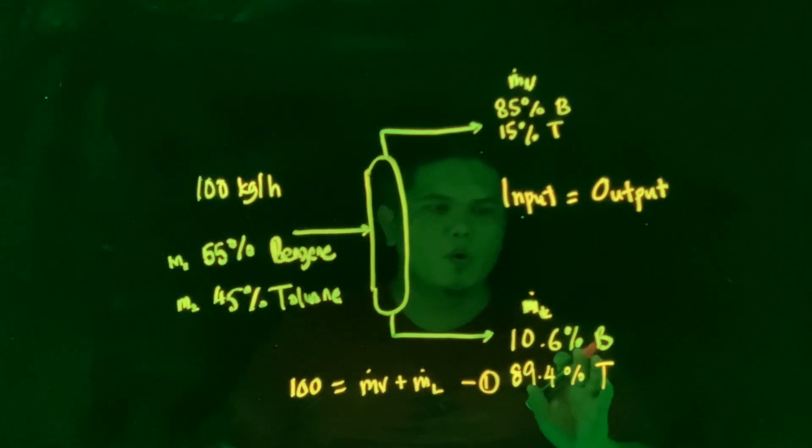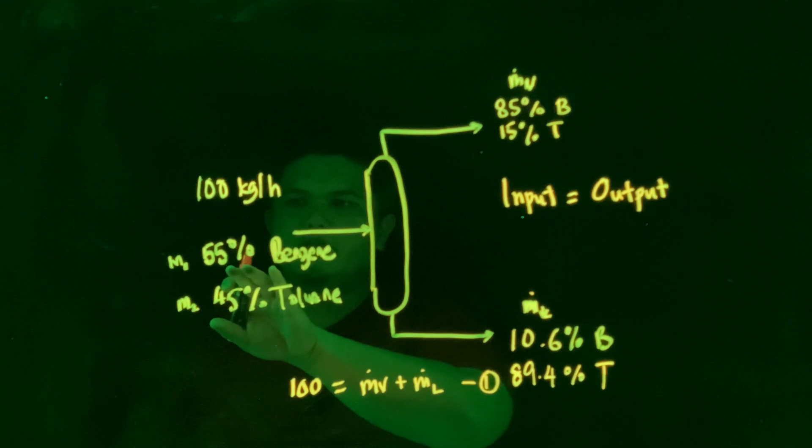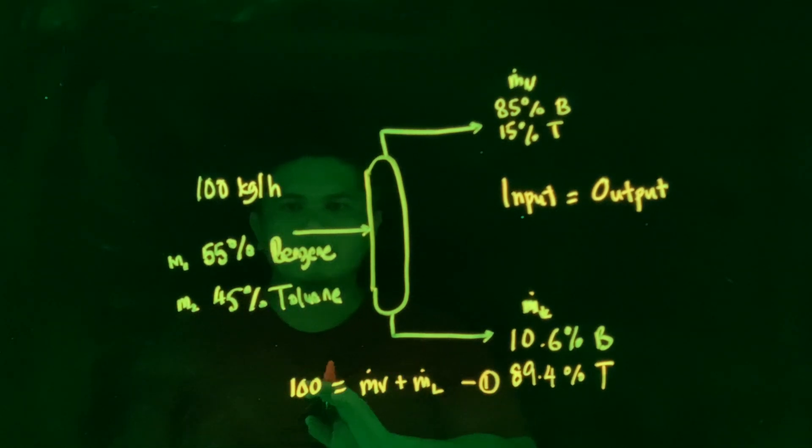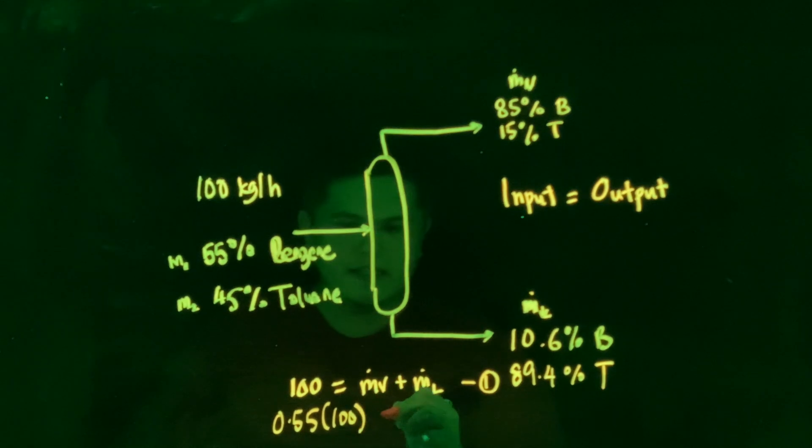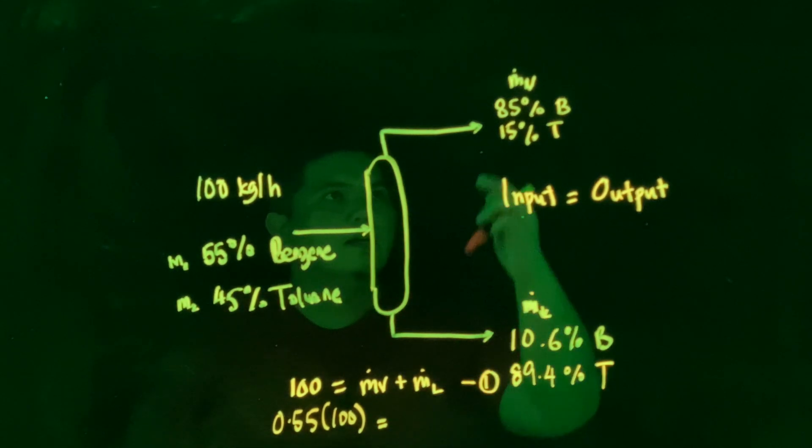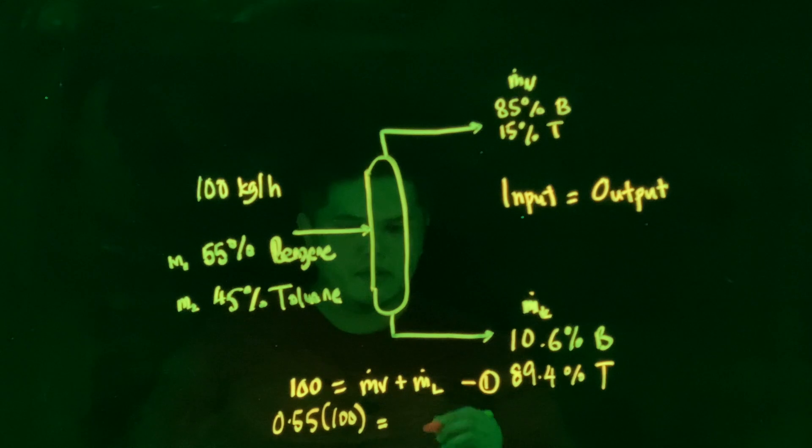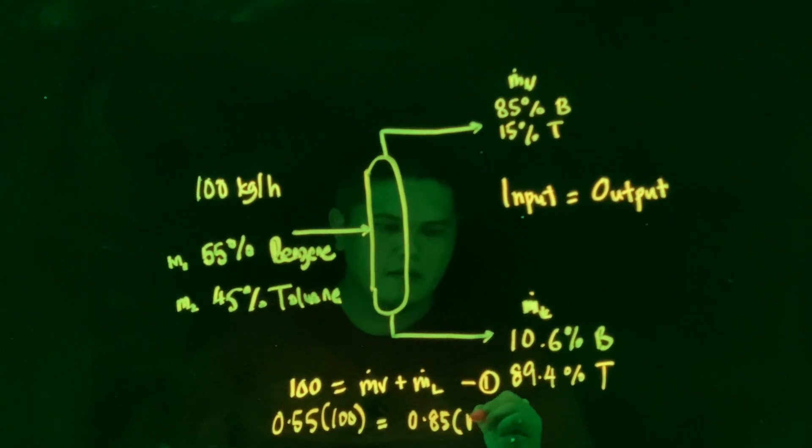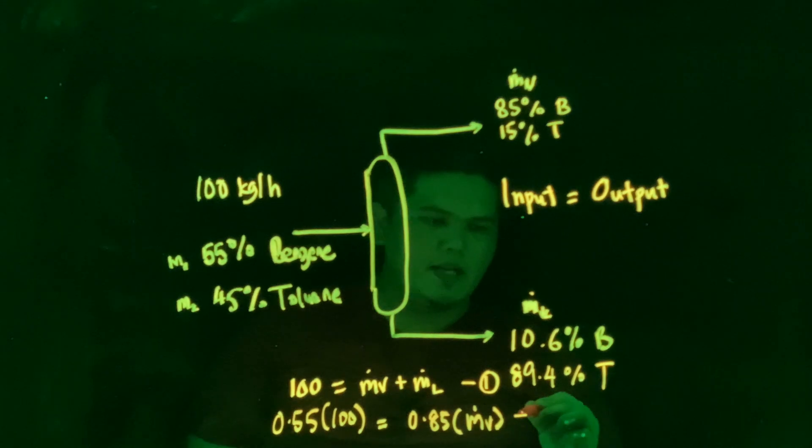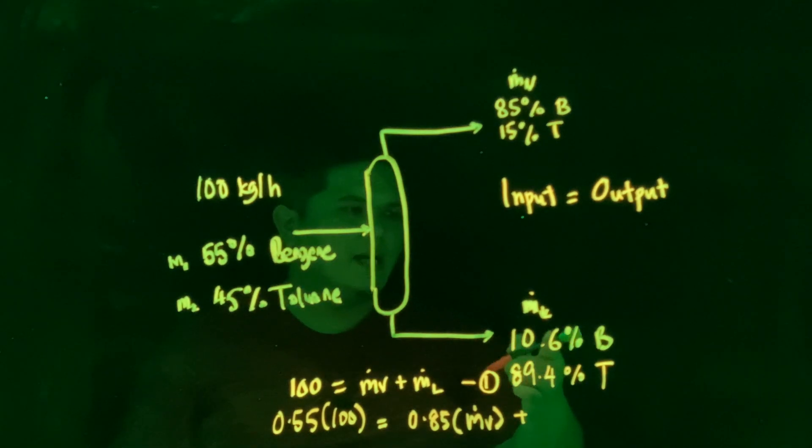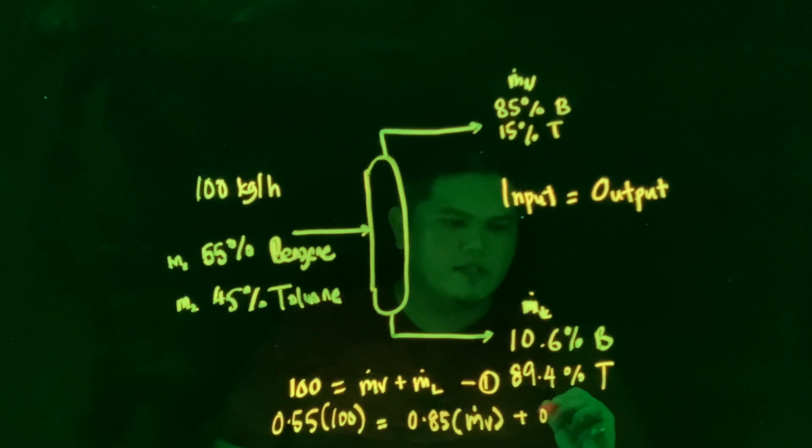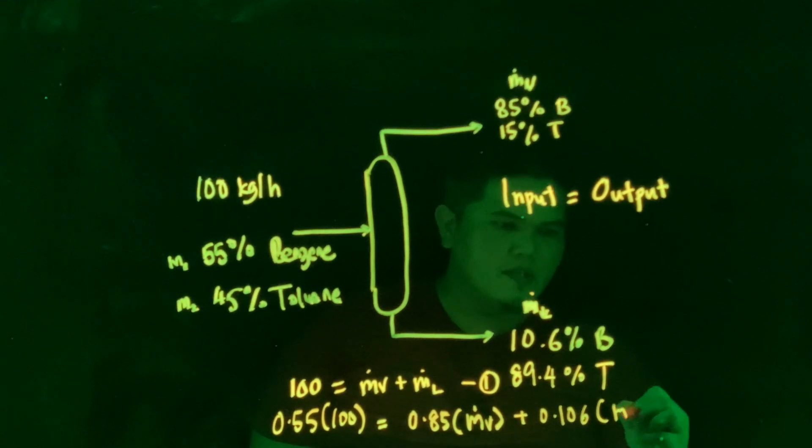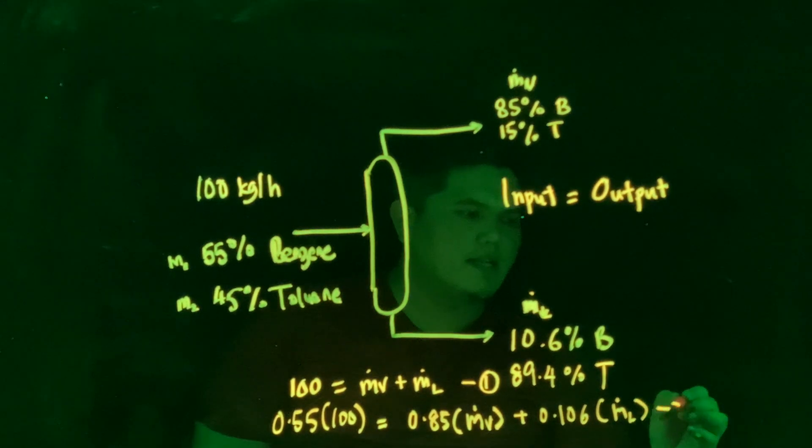The second equation is that we know that there are 55 percent of benzene in terms of the mass fraction of benzene coming in. So we can also write down 0.55 multiply with 100 is equals to, we know that 85 percent goes to the top, 0.85 multiply with MV plus, we know that there will be 10.6 percent at the bottom, which is 0.106 times ML. So this is our second equation.